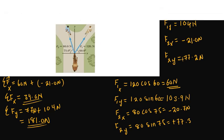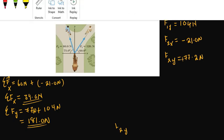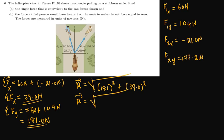Now let's find the resultant. The resultant force equals the square root of 181 squared plus 39.0 squared. The square root of that figure is simply 185 Newtons. That is our final answer for the resultant force magnitude.